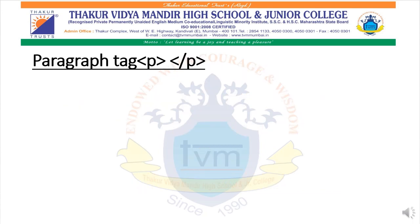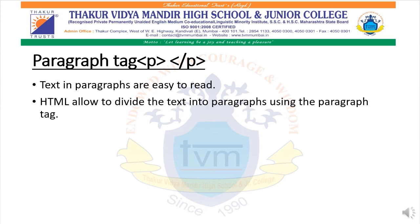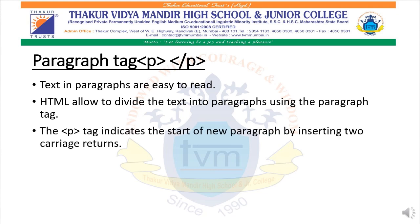Paragraph tag: As you see on the screen, paragraph tag starts with an open P tag and close P tag. Paragraph tag makes text easy to read. HTML allows us to divide the text into paragraphs using the P tag. Using a paragraph tag, a paragraph always starts on a new line.